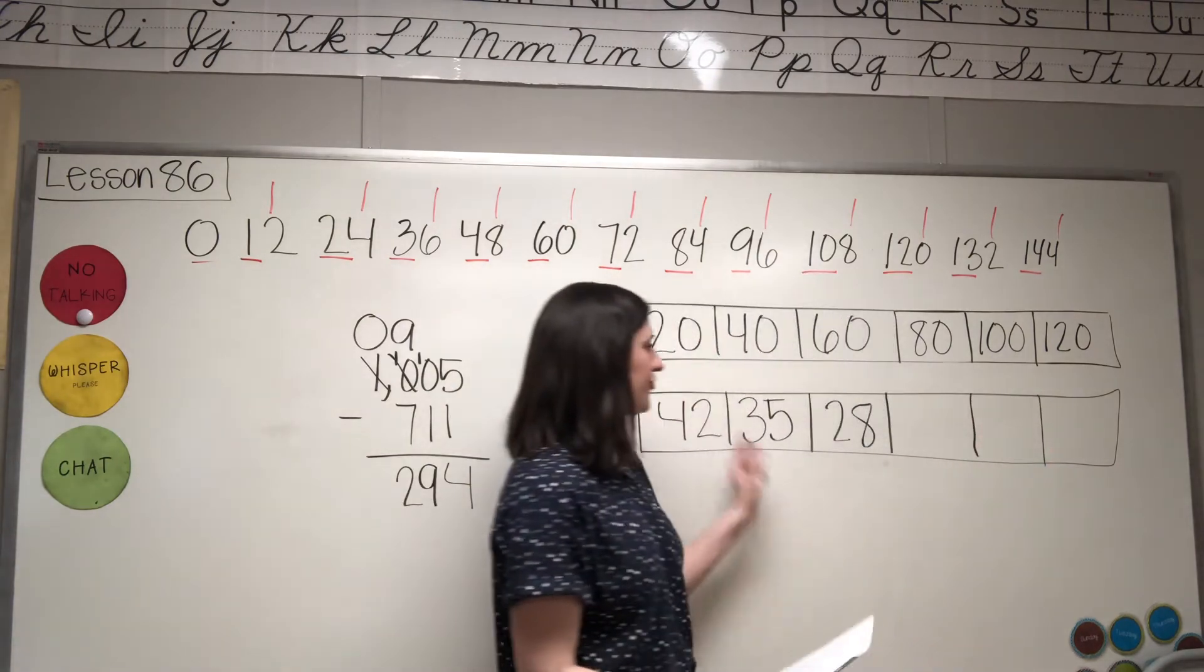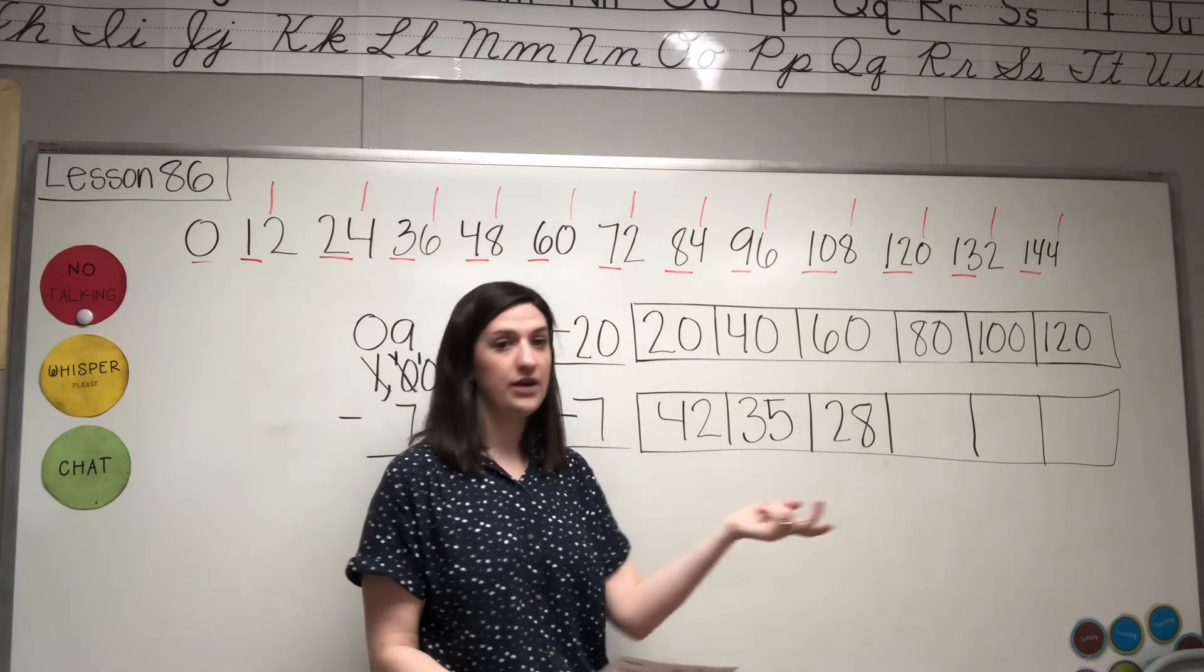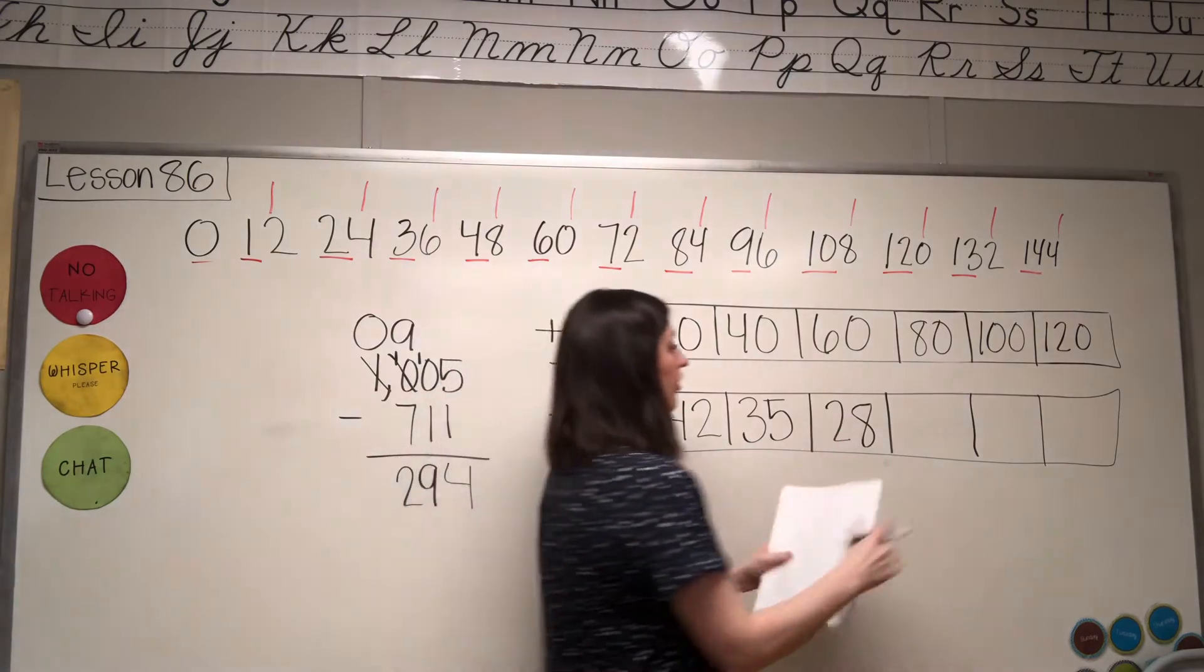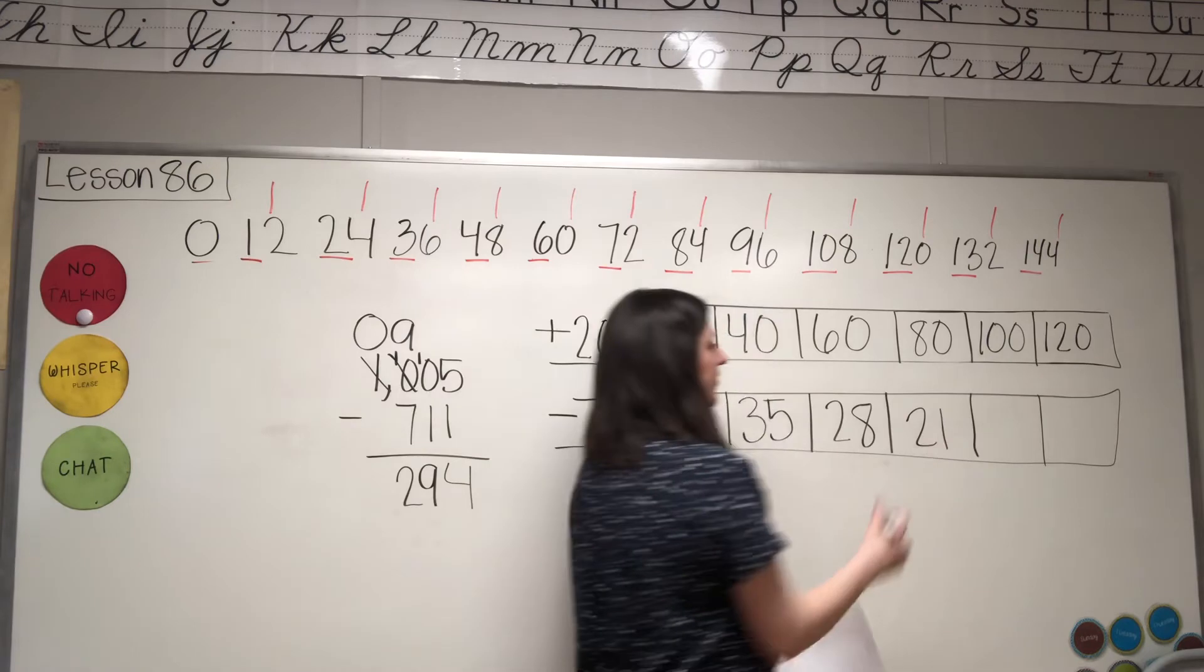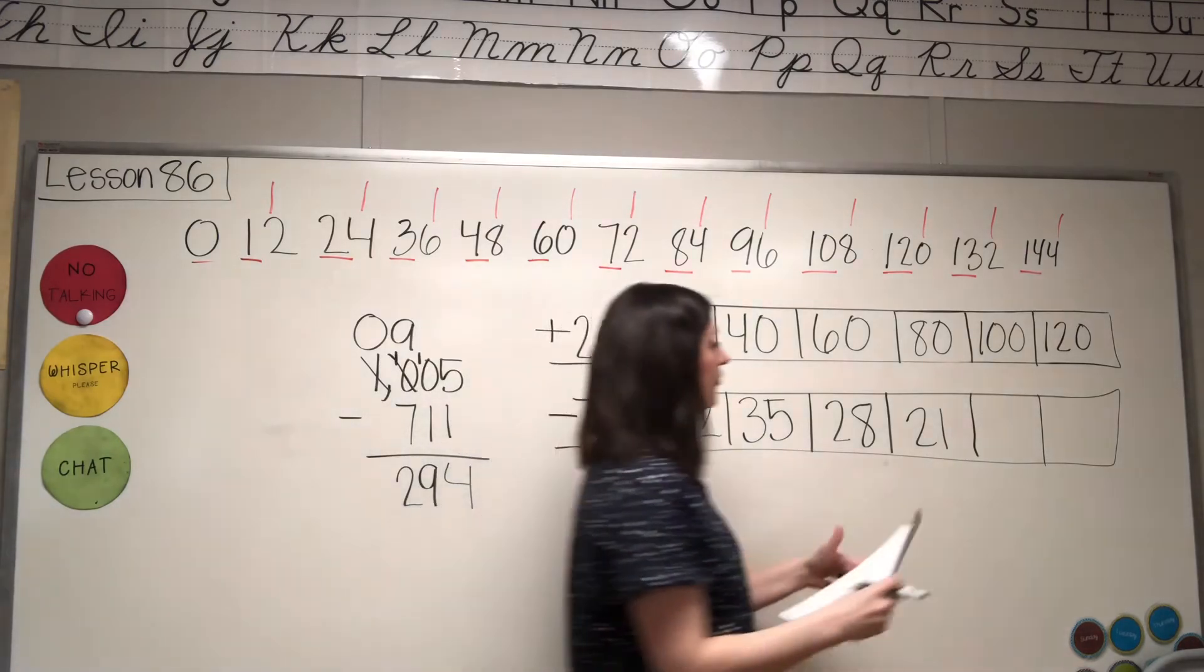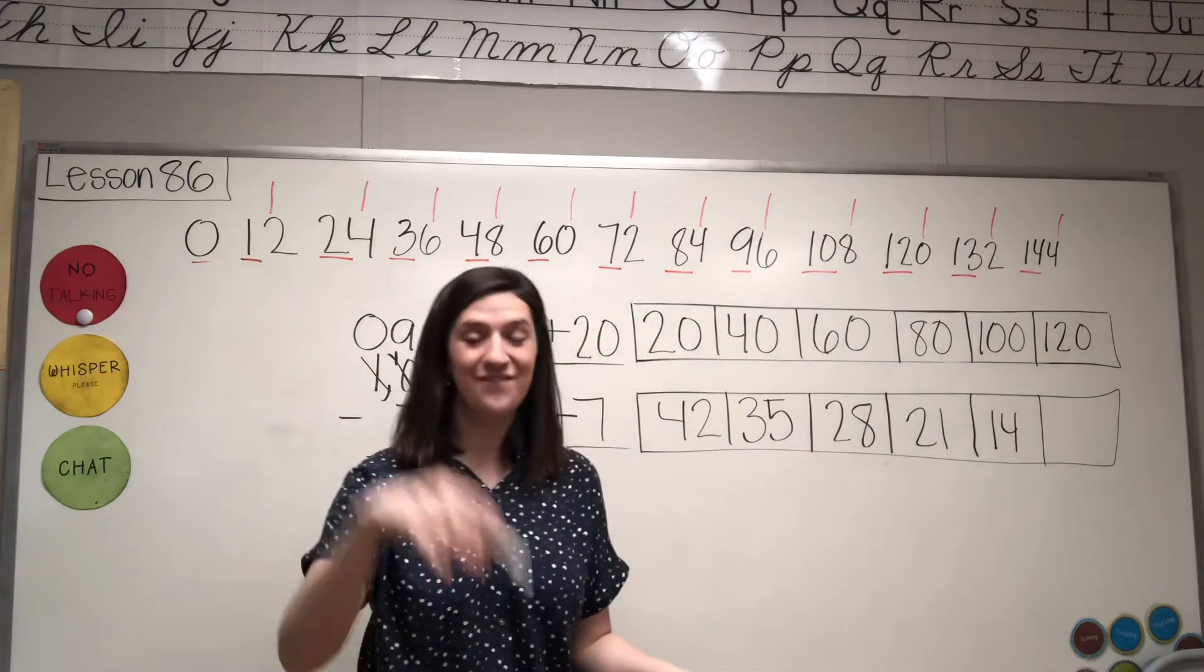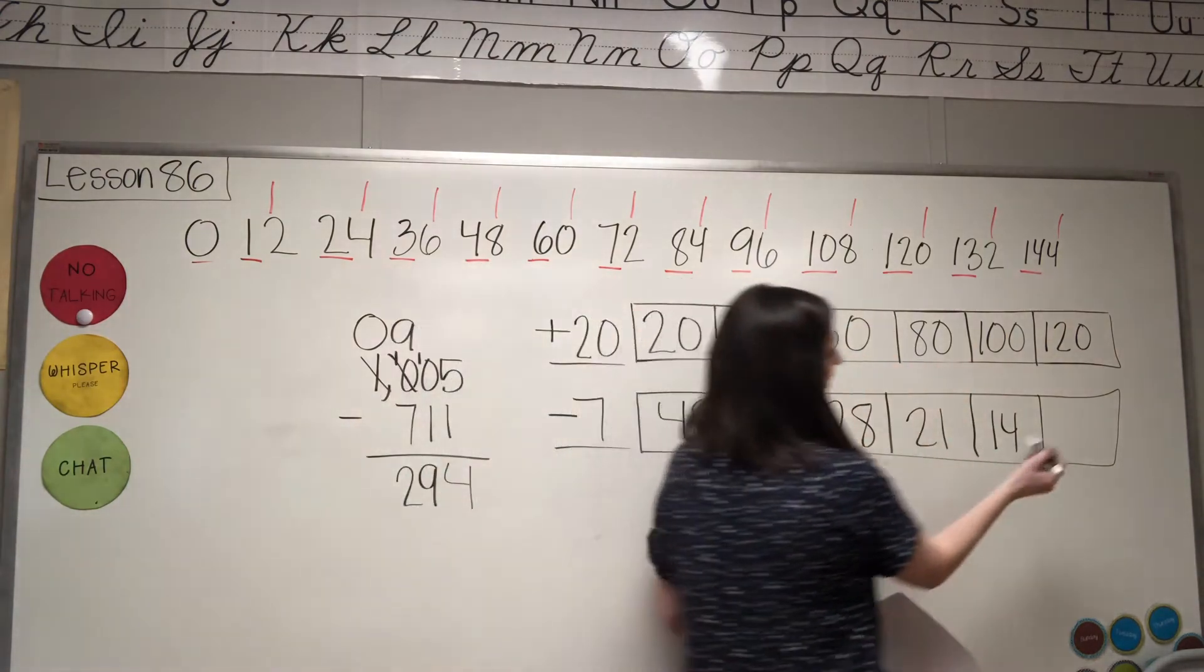To fill in the rest, you just do the number that comes before. So 0, 7, 14, 21, 28, so this will be 21. 0, 7, 14, 21, so this will be 14. And then 0, 7, 14, this last one will be 7.